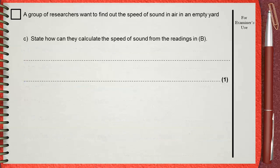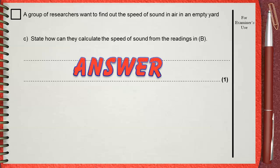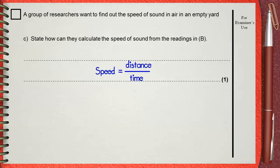Question C. State how can they calculate the speed of sound from the readings in B. This is a simple question if you understood the experiment, using the equation speed equals distance over time.